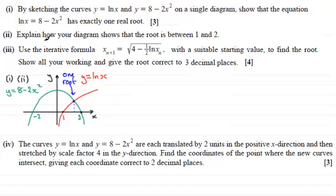Okay, now in part 3 we've got to use the iterative formula x subscript n+1 equals the square root of 4 minus a half natural log of x subscript n. So using this formula with a suitable starting value to find the root. And we've got to show all our working and give the root correct to three decimal places. So again if you'd like to have a go at this, just give you a moment to pause the video. Okay, so how did you get on with this part? Well let's just put up here that this is part 3.